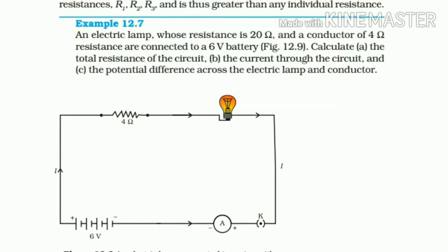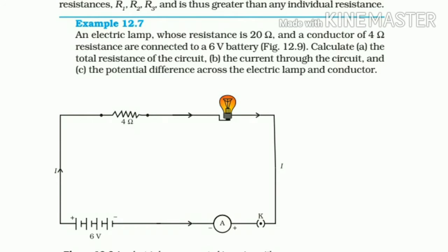Calculate the total resistance of the circuit. Then the current through the circuit. And the potential difference across the electric lamp and conductor.